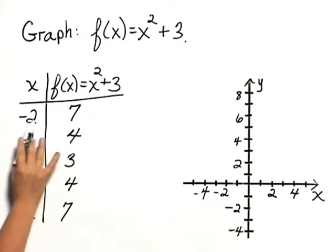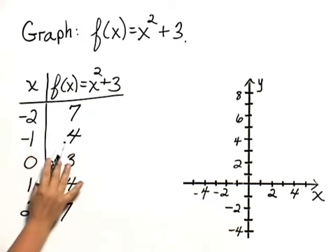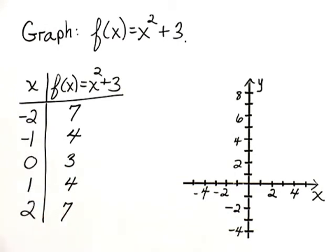So we actually have ordered pairs: negative 2, 7; negative 1, 4; 0, 3; 1, 4; and 2, 7.